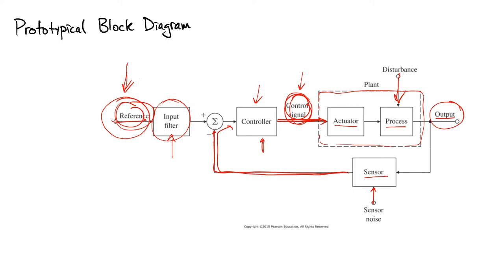The output signal comes in, the sensor does something — hopefully measuring the output well — but maybe sensor noise is added, and so a new signal appears on the next edge that should be very similar to the output but could be slightly different because of sensor noise. The role of these blocks is to do math, and the edges between the blocks are signals communicating different values — things that could be viewed on an oscilloscope. Keeping the difference between blocks doing math and edges encoding signals is really important.